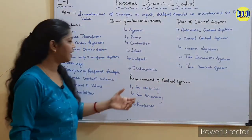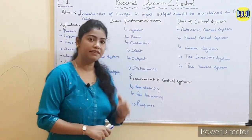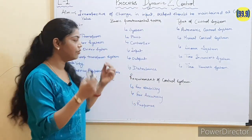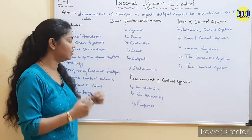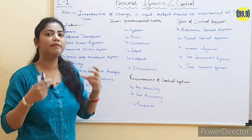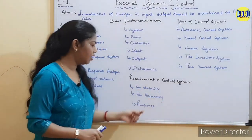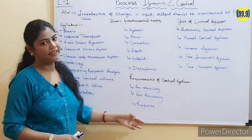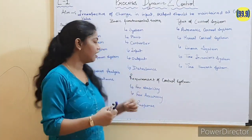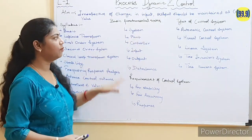Now let's look at the requirements of the control system. Why is the control system so important? The requirements are: stability, accuracy, and better performance response. These are the reasons why a control system is required. That covers the whole subject overview.